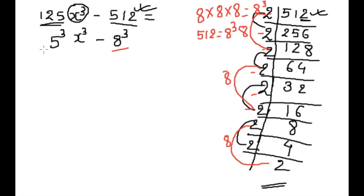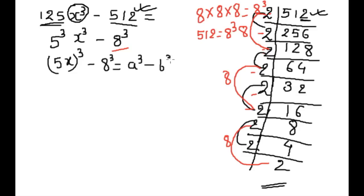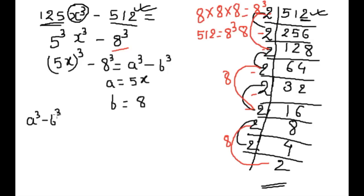Now we can write this as 5x cube minus 8 cube. It is equal to a cube minus b cube, where a is equal to 5x and b is equal to 8. Again we can put it into the formula: a cube minus b cube is equal to a minus b, times a square plus ab plus b square.